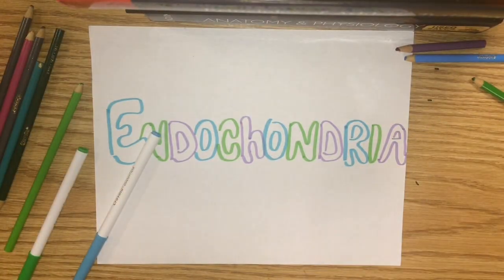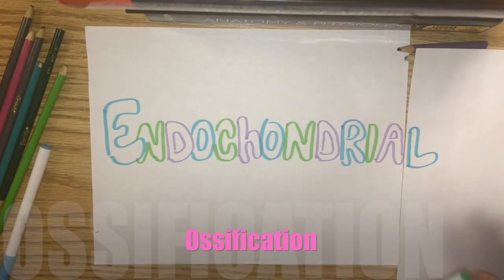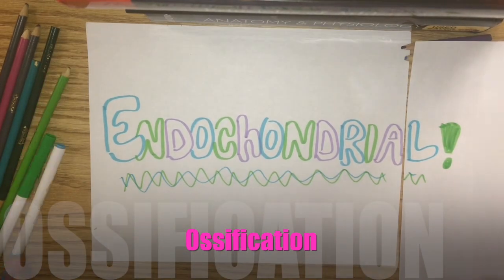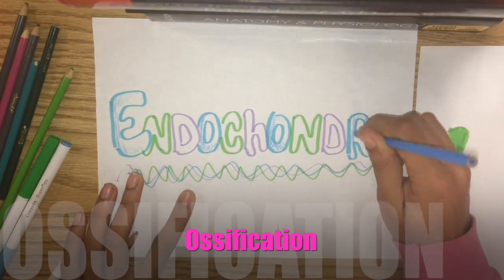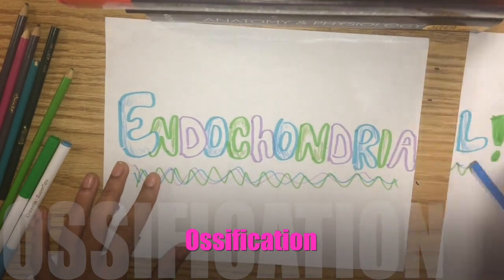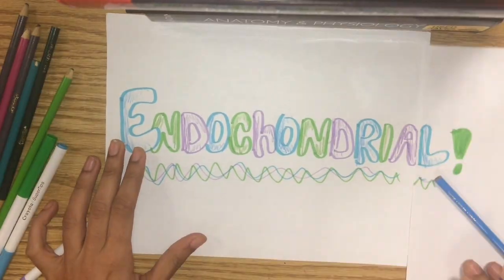The second method of bone development is called endochondral ossification. If you break up the word, endo means within, chondral means cartilage, and ossification means the formation of bone. So if you put it all together, the formation of bone within the cartilage.